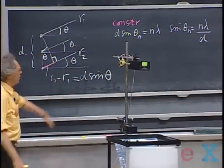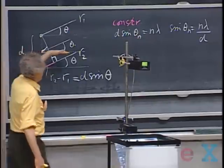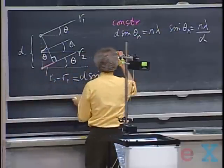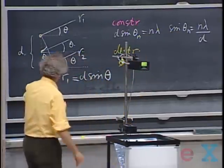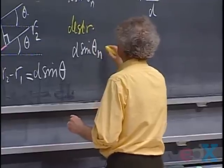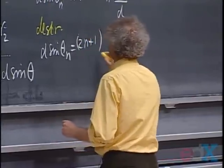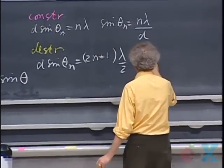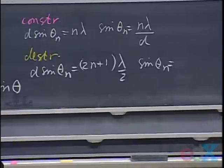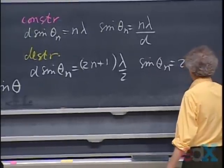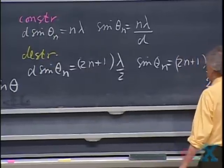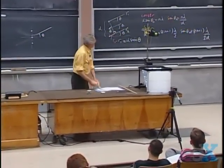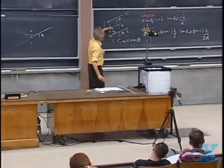This uniquely defines all directions of constructive interference: n equals zero gives the center line, n equals one, two, three, and so on. For destructive interference, D sine(theta_n) must equal (2n+1) times lambda divided by two, giving sine(theta_n) equals (2n+1) lambda divided by 2D. These formulas indicate the directions of maxima and minima as seen from the center between the two sources.